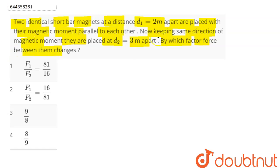So suppose these are our two short bar magnets placed parallel to each other. Initially, they have a separation of 2 meters. Now the separation is increased from 2 meters to 3 meters.